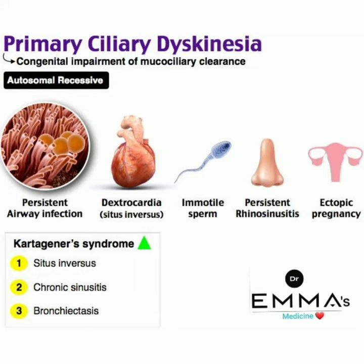The clinical features of primary ciliary dyskinesia include persistent ear and respiratory infections, history of repeated otitis media, dextrocardia, situs inversus, immotile sperm leading to infertility, persistent rhinosinusitis, and ectopic pregnancy.